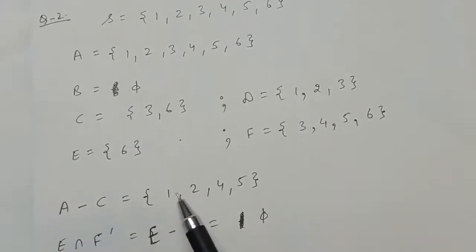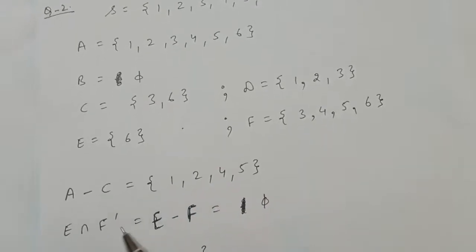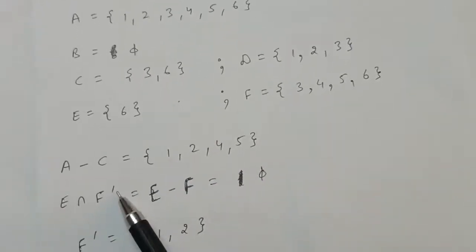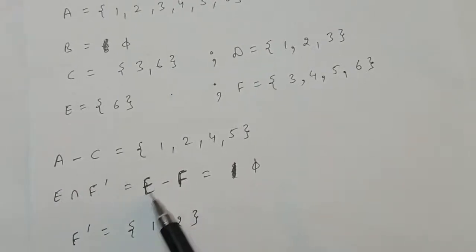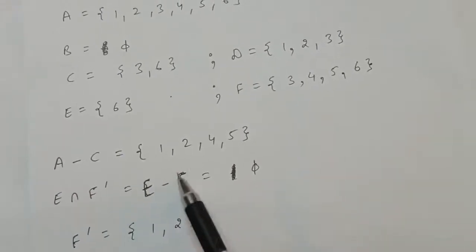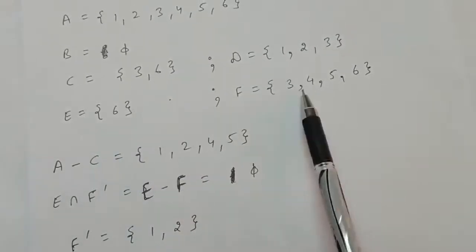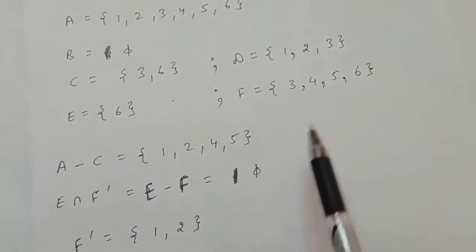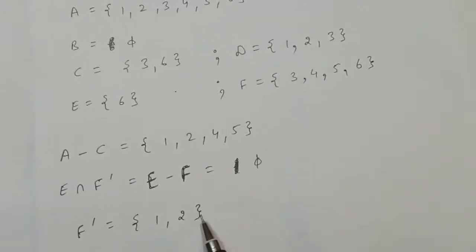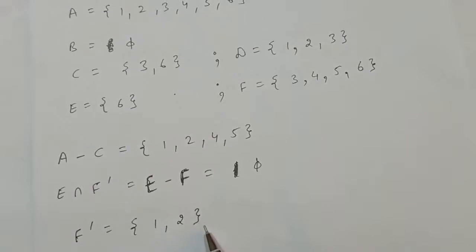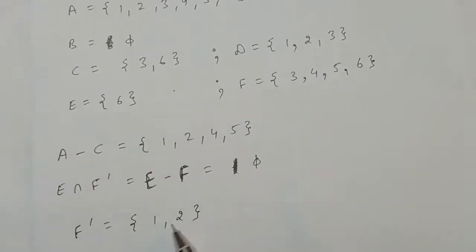Next is E intersection F complement, which equals E minus F — those elements which are in E but not in F. There is no such element because 6 appears in F also, so the answer will be phi. F complement will be the elements in the sample space but not in F, which are 1 and 2.